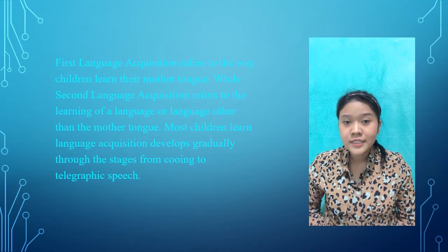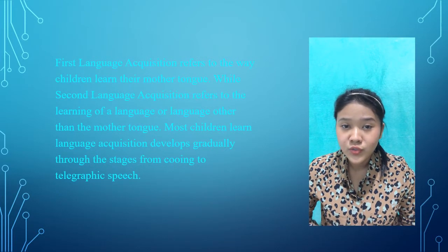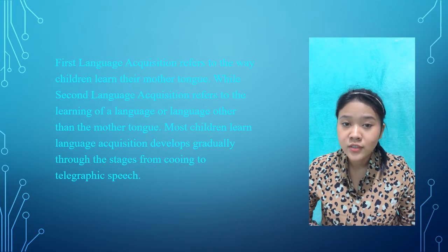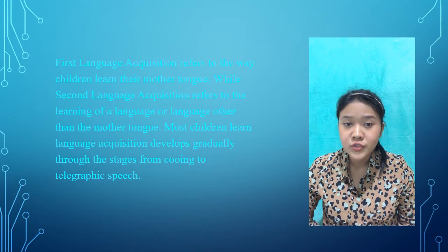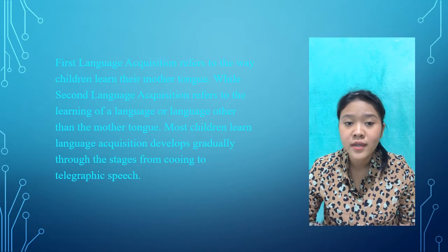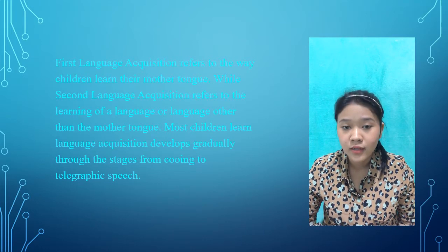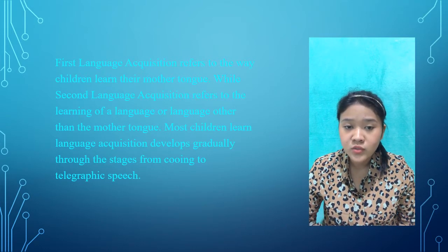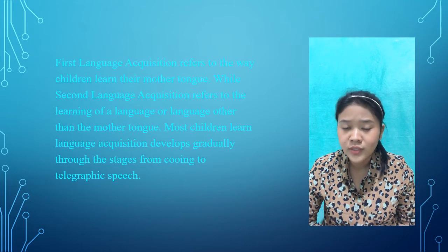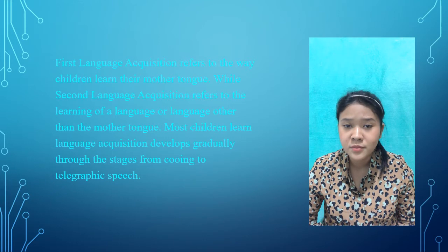First language acquisition refers to the way children learn their mother tongue, while second language acquisition refers to the learning of a language other than the mother tongue. Most children's language acquisition develops gradually through these stages, from cooing to telegraphic speech.